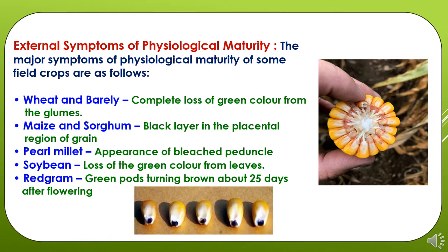What are the external symptoms of physiological maturity? There will be differences in symptoms crop to crop. In case of wheat and barley, there will be complete loss of green color from the grains and they will become yellow. In case of maize and sorghum, there will be development of a black layer in the placental region of the grain. In case of pearl millet, there will be appearance of a blackened peduncle in the cob. In soybean, there will be loss of green color from leaves, and in red gram, green pods turn brown about 25 days after flowering.